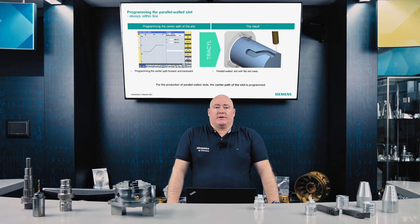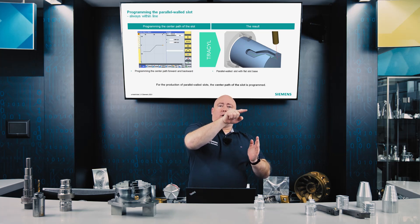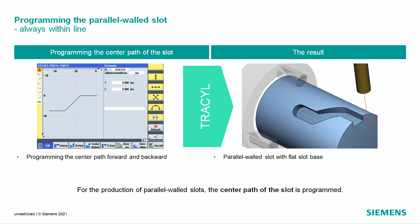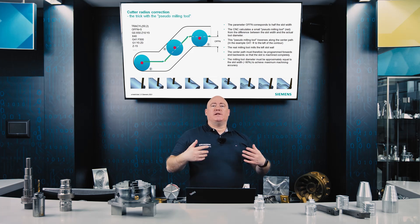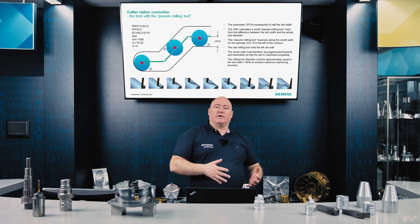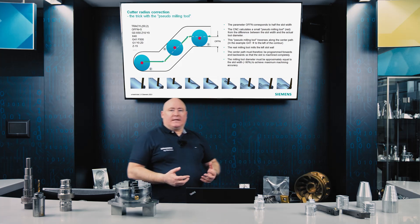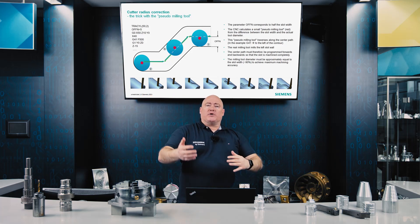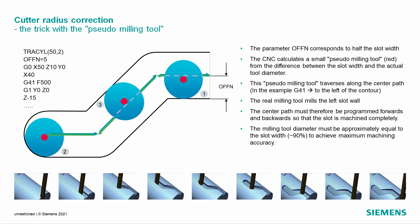When programming a slot with parallel walls, it should be noted that programming takes place in both directions, both back and forth. Simply in and then out again is not enough; instead, the contour must always be described back and forth. By programming the centre line of the slot back and forth, and with the help of the cutter radius correction G41 or G42 — that is, to the left or right of the contour — we're able to produce slots that are wider than the cutter itself. The OFF-END command describes half the slot width, and the control system takes the real physical value of the cutter from the tool management offset. The control system thus has all the components required to calculate the slot fully automatically.